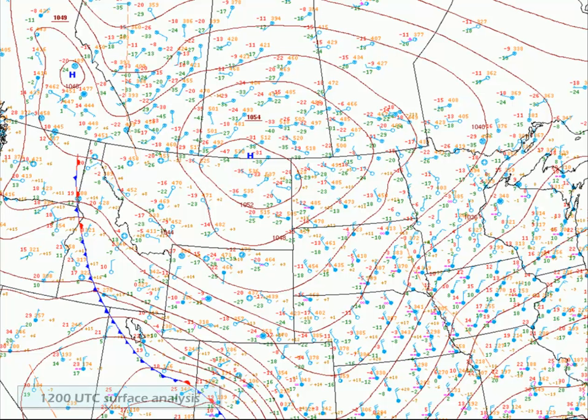This week, a very strong area of high pressure moved into the northern high plains out of Canada. At 1200 UTC on February the 1st, the central pressure of the high was reported on the surface analysis chart as 1,054 millibars.